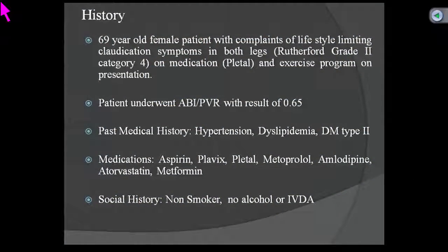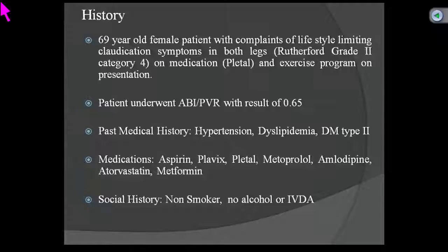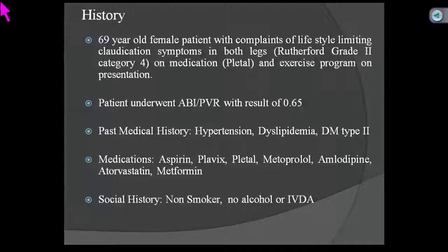Thank you, Dr. Krishnan. We have a 16-year-old female patient with lifestyle-limited claudication symptoms in both legs. She's Rutherford classification grade 2, category 4, on Pletal and aspirin, and in an exercise program, but still has persistent symptoms. ABI-PVR showed 0.65 bilaterally. Past medical history includes hypertension, dyslipidemia, and type 2 diabetes.